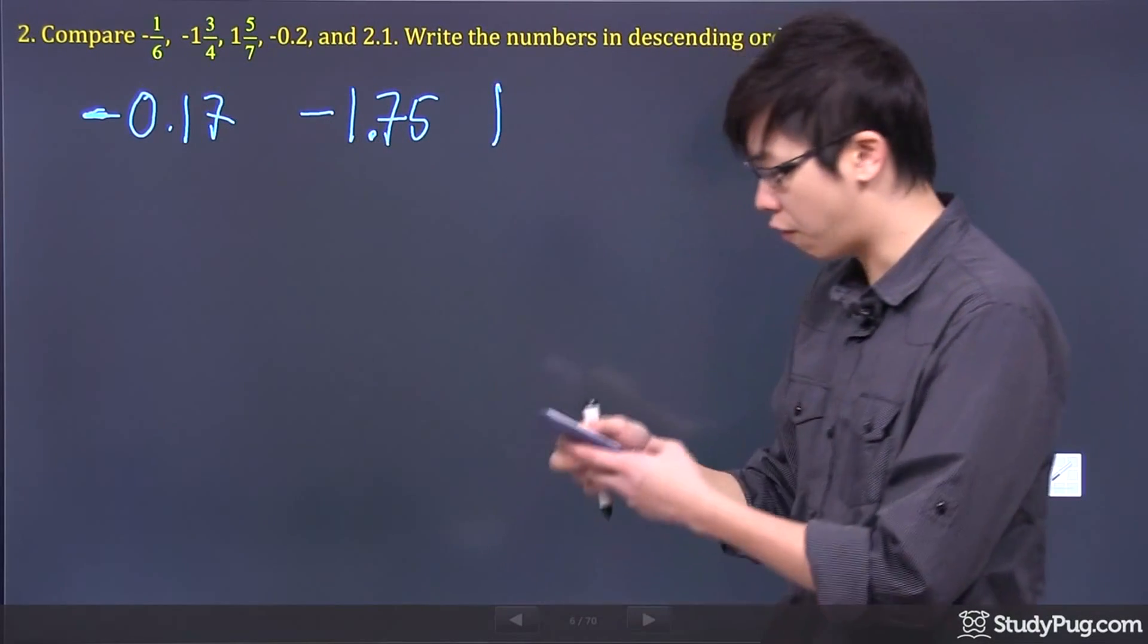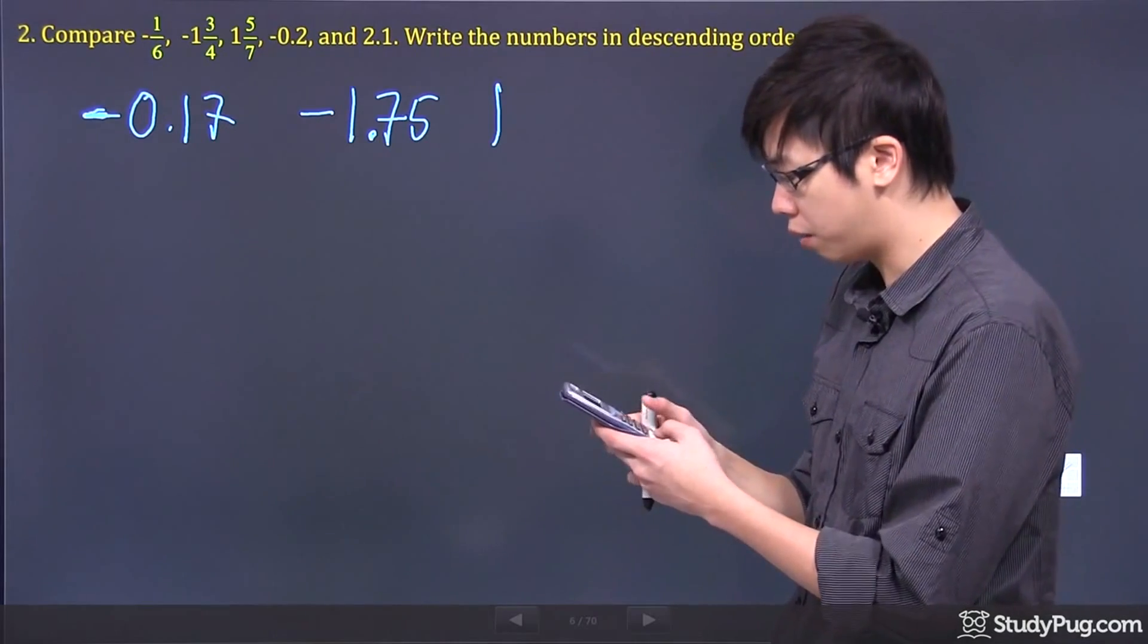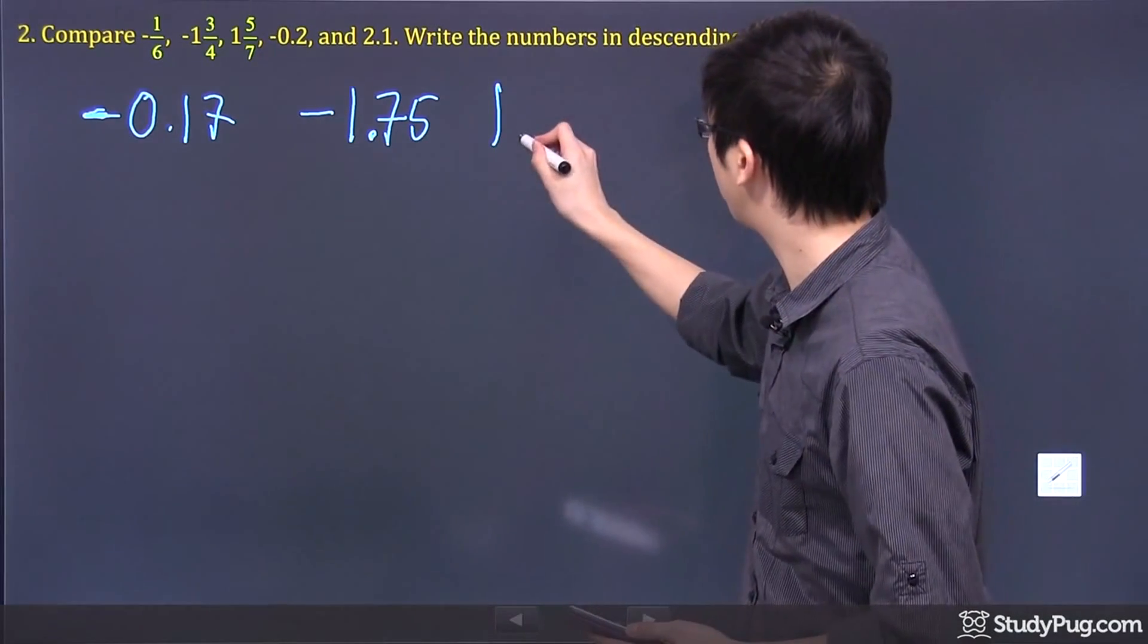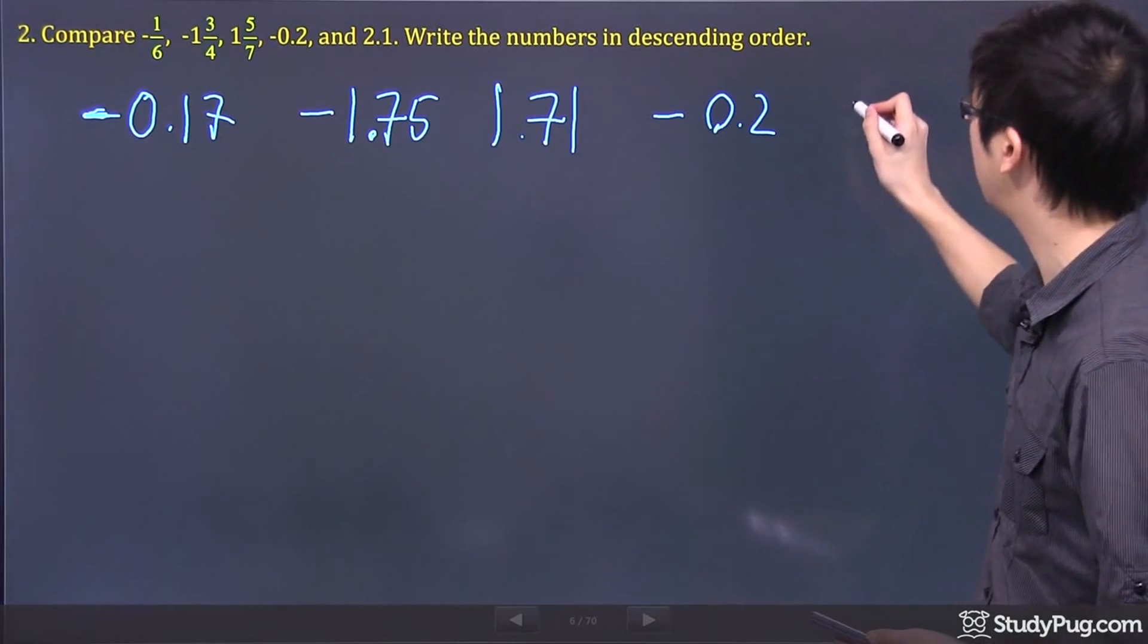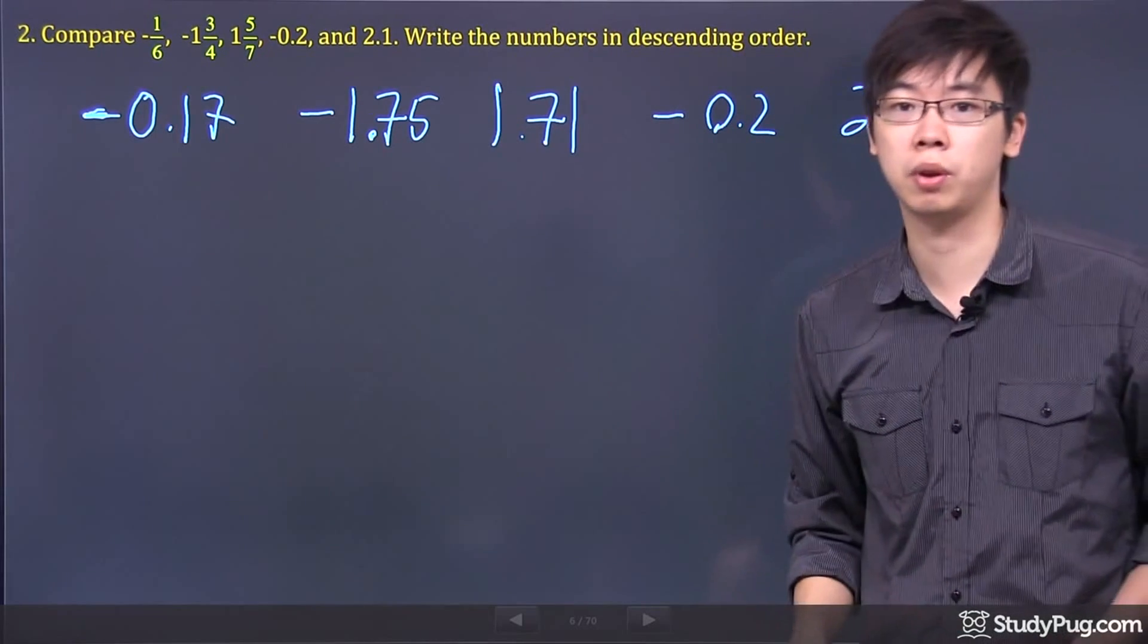The next one we have is 1 and 5 over 7, which is 0.71. So it's 1.71 and it's positive. The next one is negative 0.2, already ready to go. And the last one is 2.1.